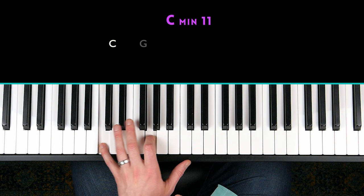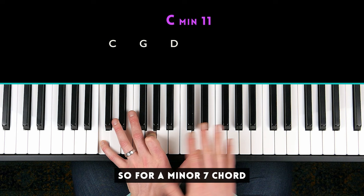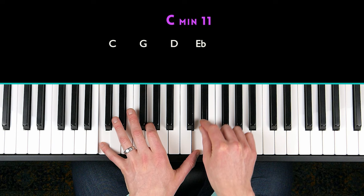And then in your right hand, you're going to find the chord's third. So for a minor seven chord, you'll find the minor third, which is a half step up from the ninth. You're going to build another stack of fifths in your right hand.